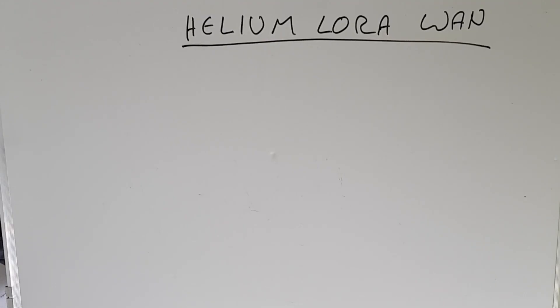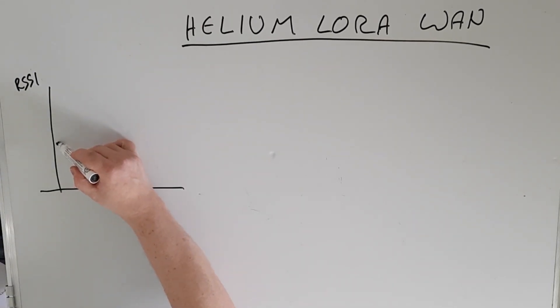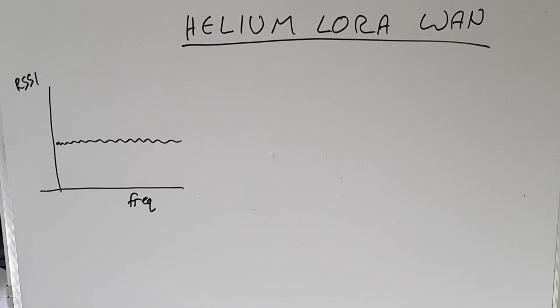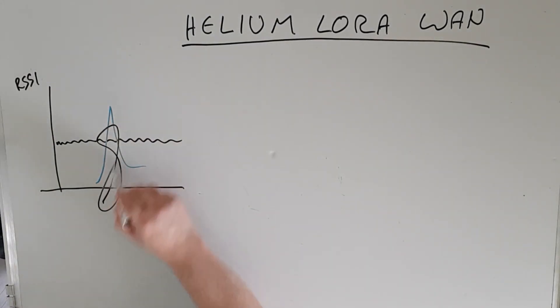When we look at LoRaWAN for Helium, we first need to look at signal and noise and the way the technology works. Signal or receive signal strength indication on this axis across a frequency range on this axis. We have noise here which tends to be a similar signal level across the frequency range we're looking at. Now in a basic way, if we had a power transmission coming in from a beacon, say it might look like this. The problem is that if some interference comes along, it could completely take out our signal.